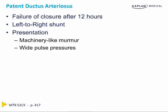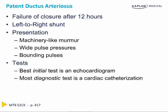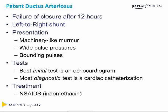The left-to-right shunt in PDA produces a machine-like murmur, because regardless of systole or diastole, there is always blood flowing through the PDA due to the persistent pressure differential. PDA also causes wide pulse pressures: backflow through the PDA lowers diastolic pressure, and the overworked left ventricle compensates by pumping harder during systole, raising systolic pressure — creating a gap. This also explains the bounding pulses. The best initial test is an echocardiogram; the most diagnostic test is cardiac catheterization. Importantly, treatment is not surgical — it is NSAIDs, specifically indomethacin, a potent NSAID used to close the PDA.